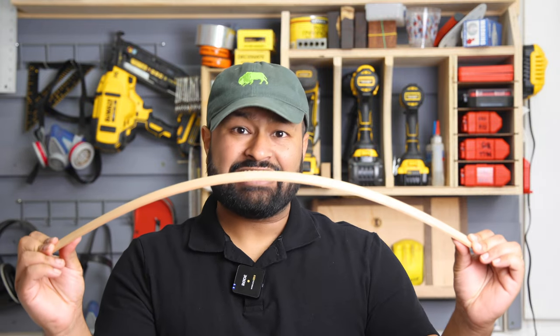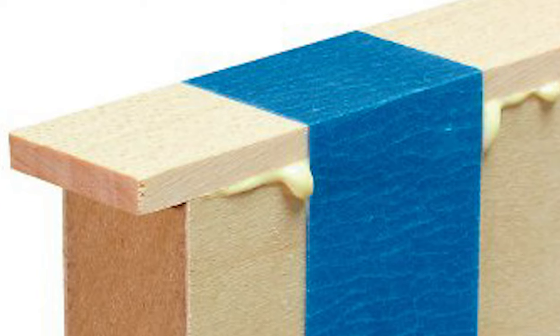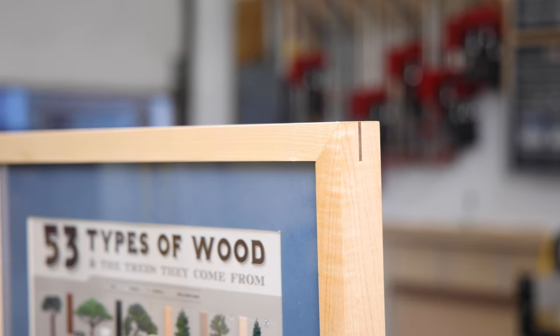Thin pieces of wood like this are useful in woodworking for things like bent lamination, plywood edging, and my personal favorite, miter splines.